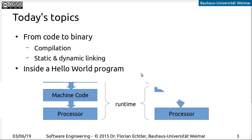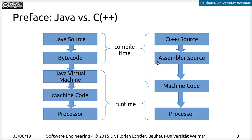First, let's look at how source code is converted into something that can be executed. There are two parts to this process: what happens at compile time, and what happens at runtime. When you have Java code and compile it with JavaC, it's converted into a class file containing bytecode. Bytecode is then executed by the Java Virtual Machine when you run it, and at runtime the JVM translates the bytecode into machine code, which is then actually executed on the processor.